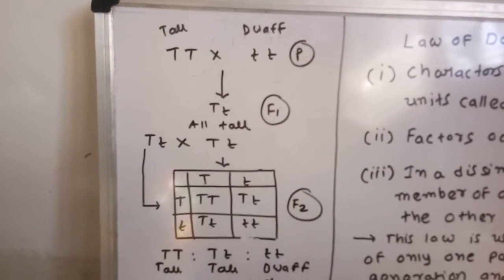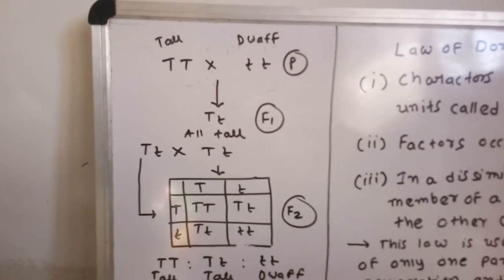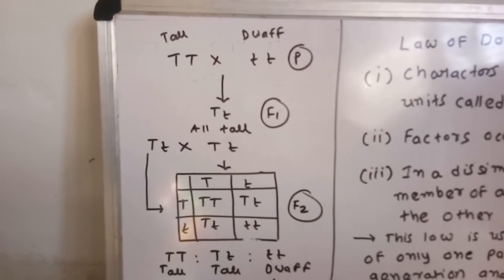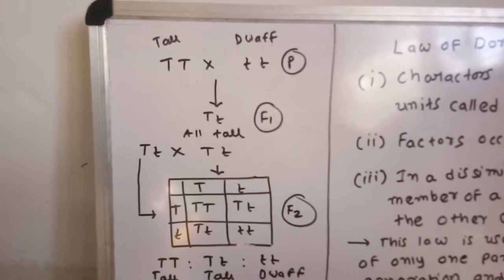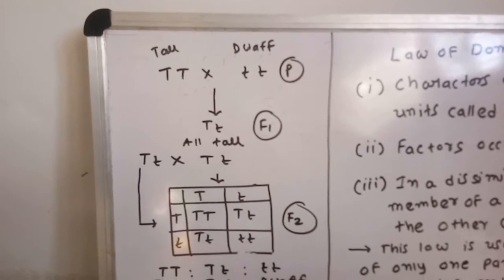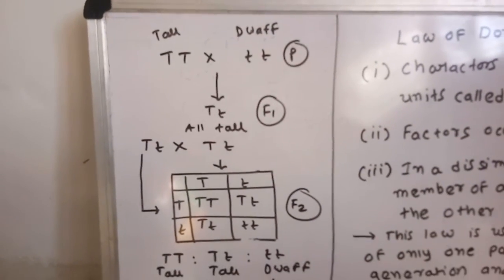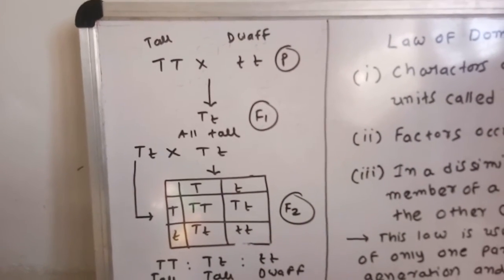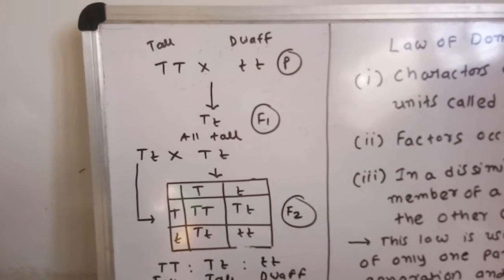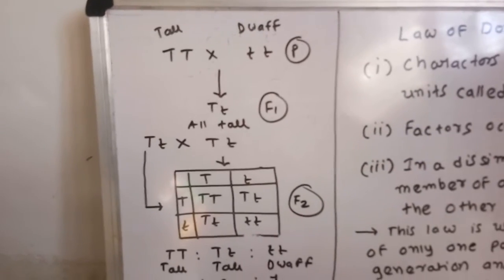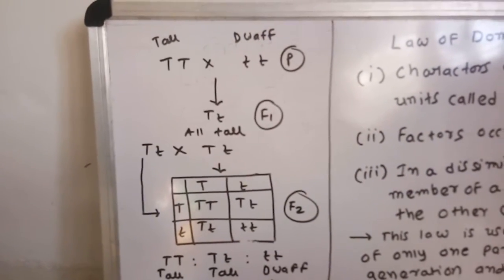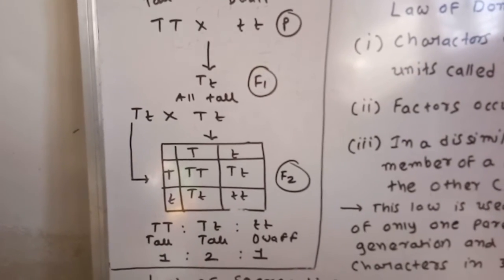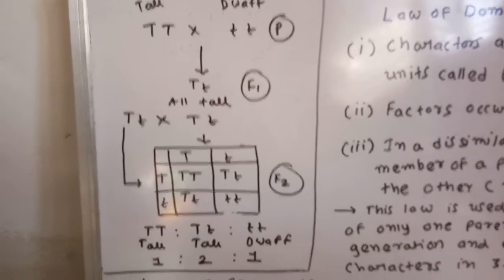This third point is the core — the heart — of the law of dominance. When a pair of dissimilar factors or dissimilar alleles are present, one allele is dominant over another allele, and only that allele is expressed in such a heterozygous condition. So if we have dissimilar alleles, then one allele is expressed and the other allele is not expressed. This is the law of dominance.